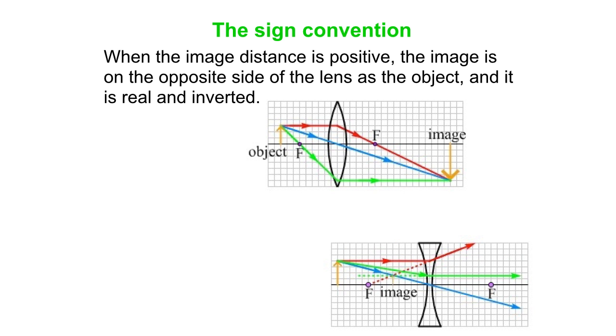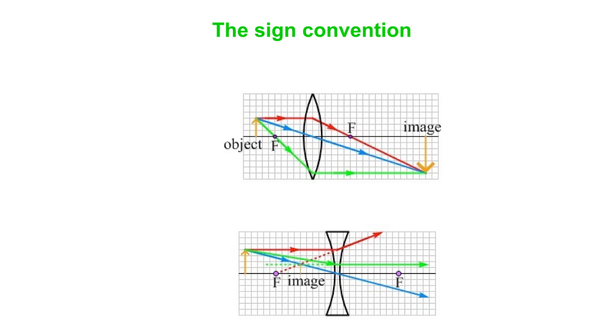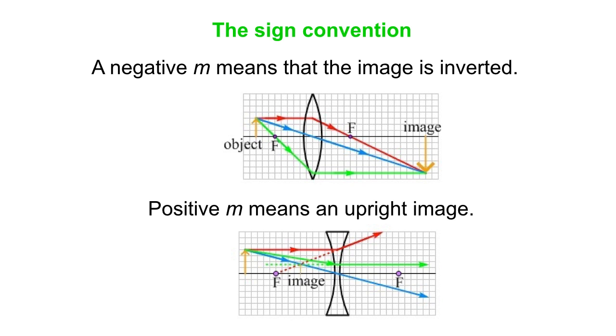So when the image distance is positive, as it is in this top case, the image is on the opposite side of the lens as the object, and it's real, and it's inverted. If the image distance is negative, then the image is virtual, upright, and on the same side of the lens as the object is. A negative M means the image is inverted, as in the top picture. Positive M means it's upright, as in the bottom picture.